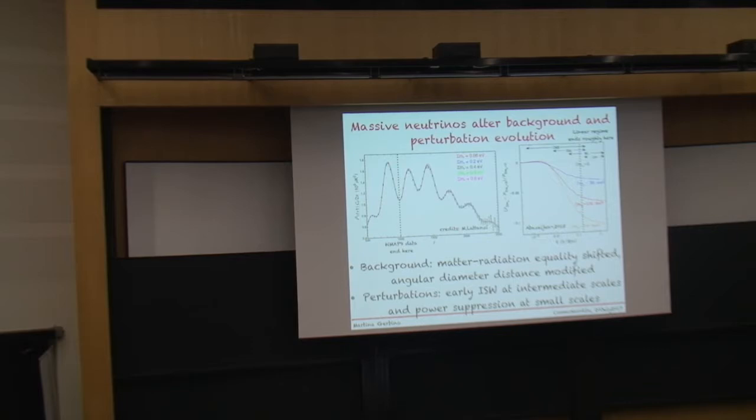Basically, the bottom line is that changing the neutrino masses in our feet, we can change the shape of the CMB power spectrum. This is the TT CMB power spectrum. And up to WMAP, we were able to constrain neutrino masses by looking at the effect that they have, especially on the first acoustic peak.